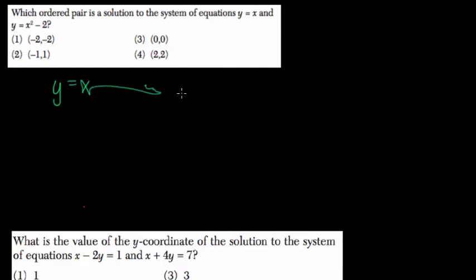So I'm going to set it up so y equals x, and then y equals x squared minus 2. So here, at some point, x is going to equal x squared minus 2. They're going to cross.